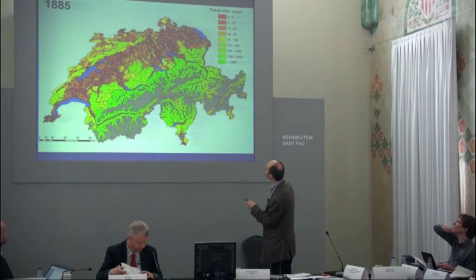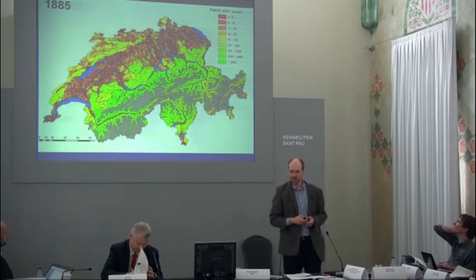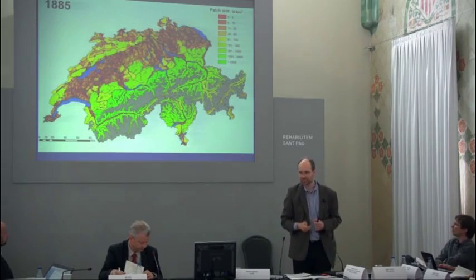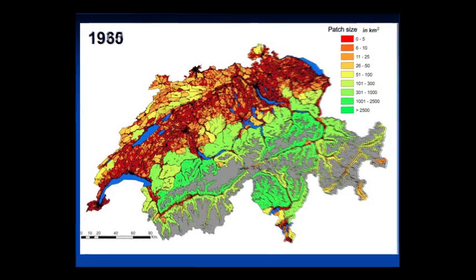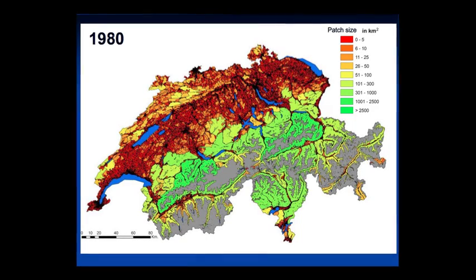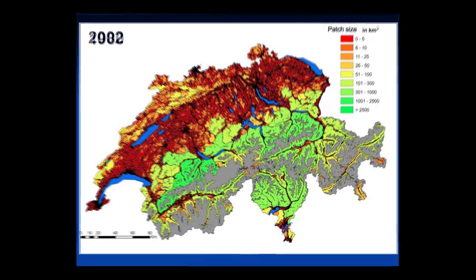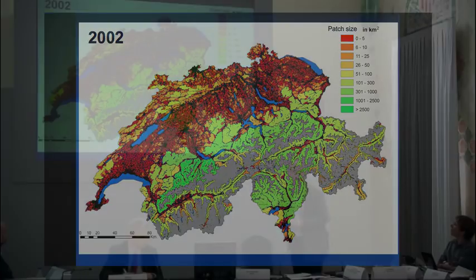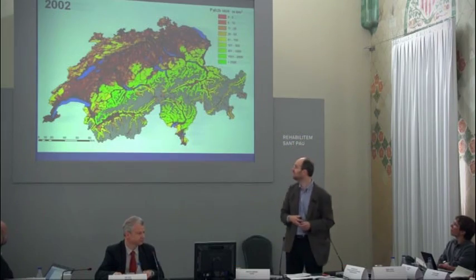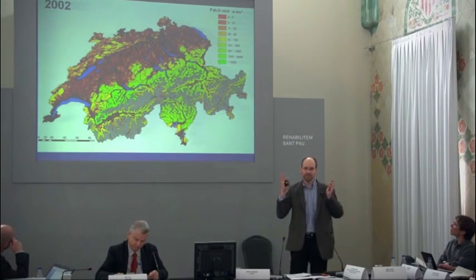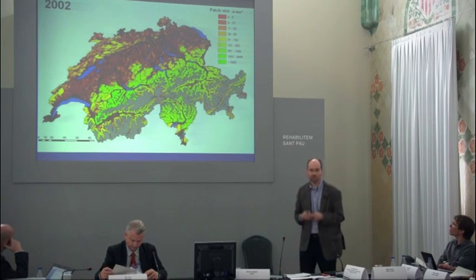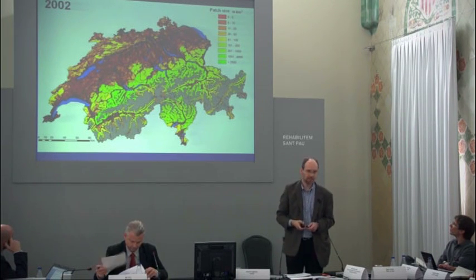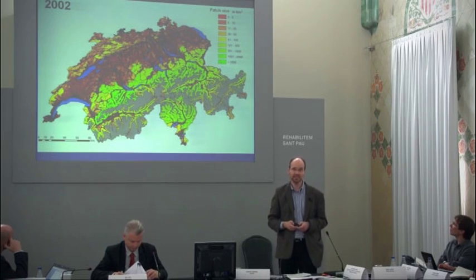Here's Zurich, here's Basel, here's Bern. Now watch how the landscape has changed: this is 1935, this is 1960, this is 1980, this is 2002. As you can see, these patches have shrunk quite a bit, and the landscape is changing at a very rapid pace — and it's still ongoing.